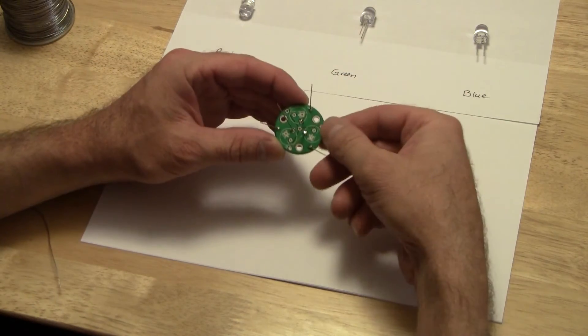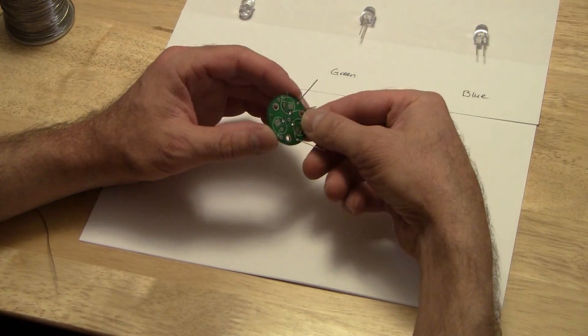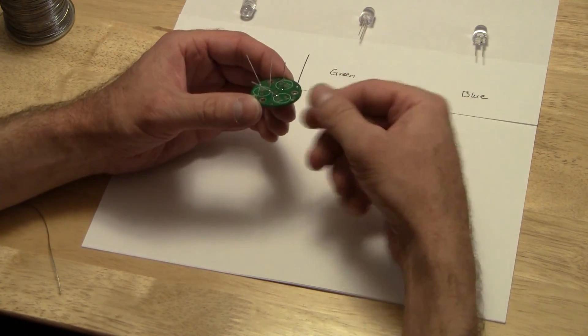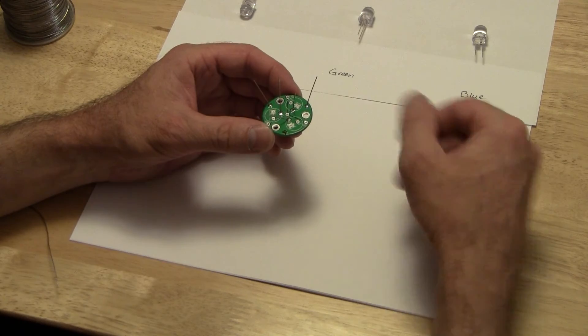So there we are, we've got everything soldered on and now all we need to do is just trim the leads off to get ready for the next step.